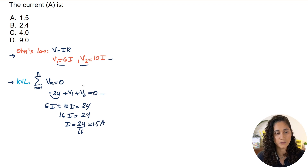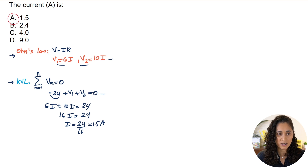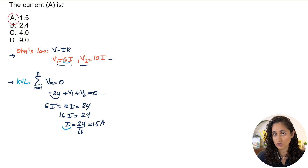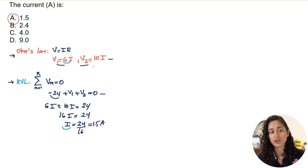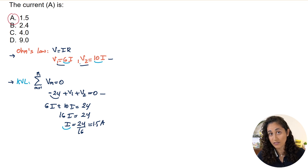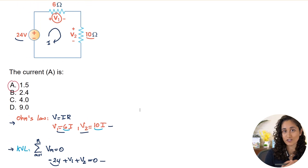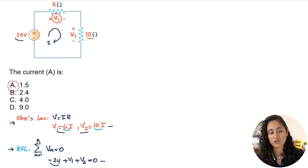Looking at the multiple choice, the answer is A. Now let's say we also want to find V1 or V2 — that's easy since we already have the current. Just plug I back into V1 equals 6I, or into V2 equals 10I. On the FE exam, instead of asking for current, the problem may ask for voltage, so you'd find current first and then substitute back.